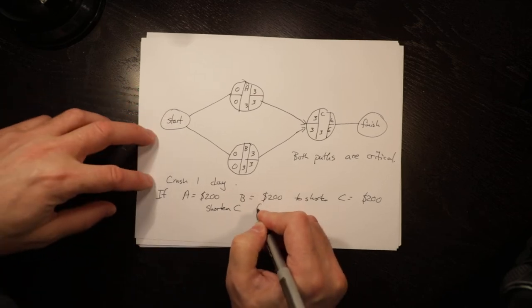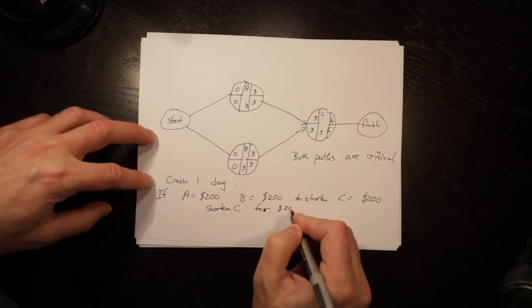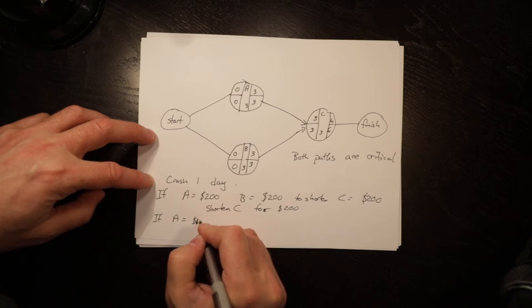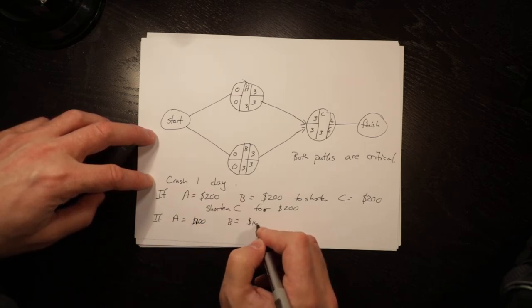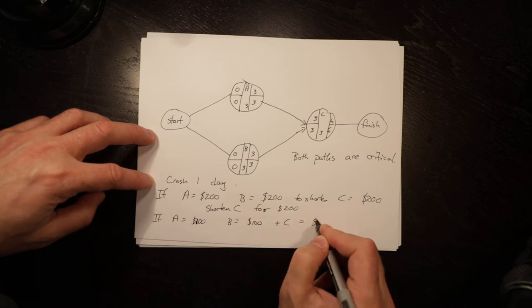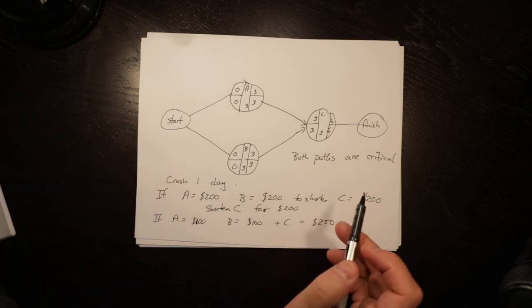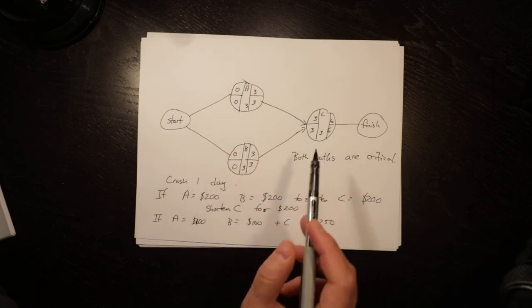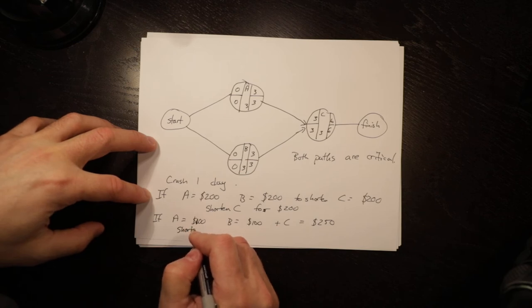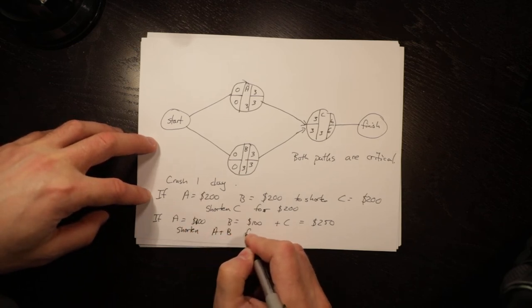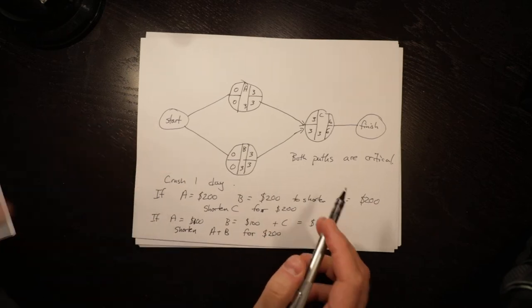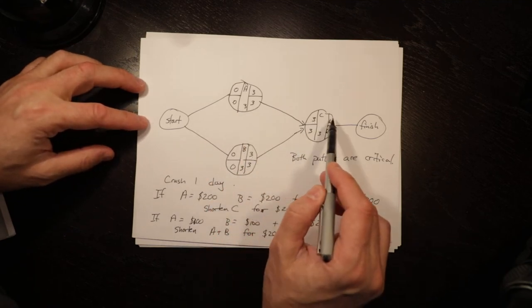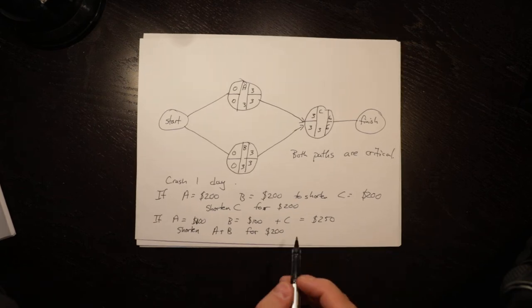But if on the other hand if A equals $100, B equals $100, and C equals $250 to shorten, in that circumstance you would shorten A by a day, shorten B by a day, and that would be cheaper than shortening C. And it would achieve the same thing. This would be 0, 2, this would be 0, 2, 2, 5 and you would have a shorter project.